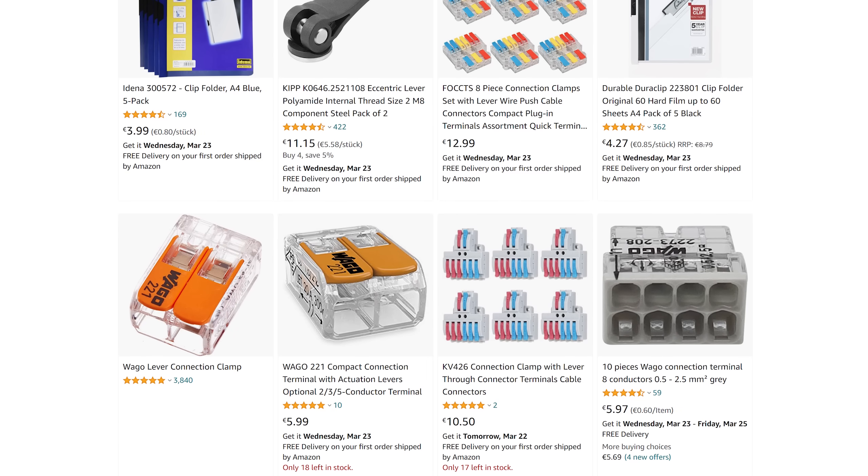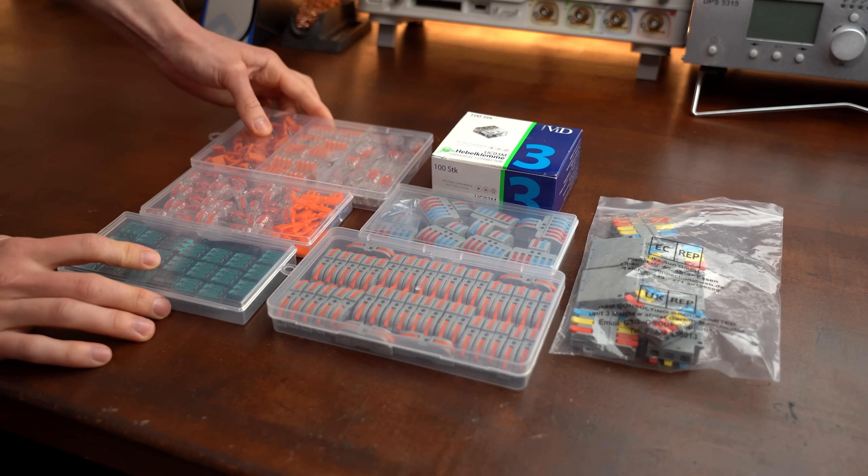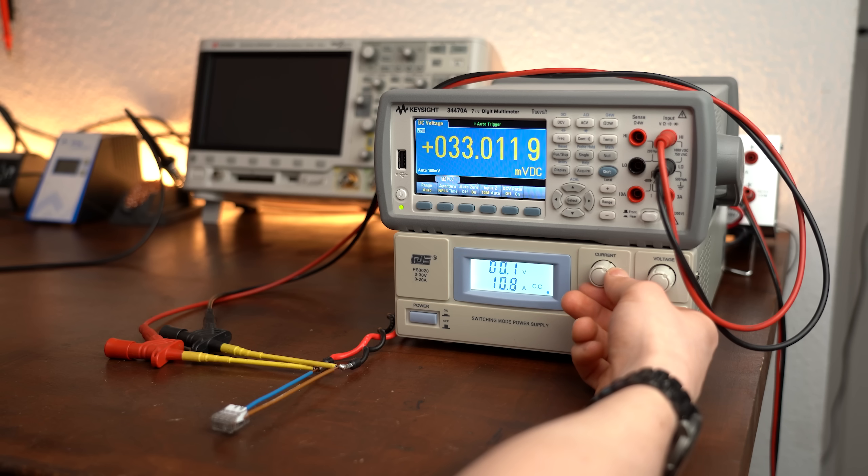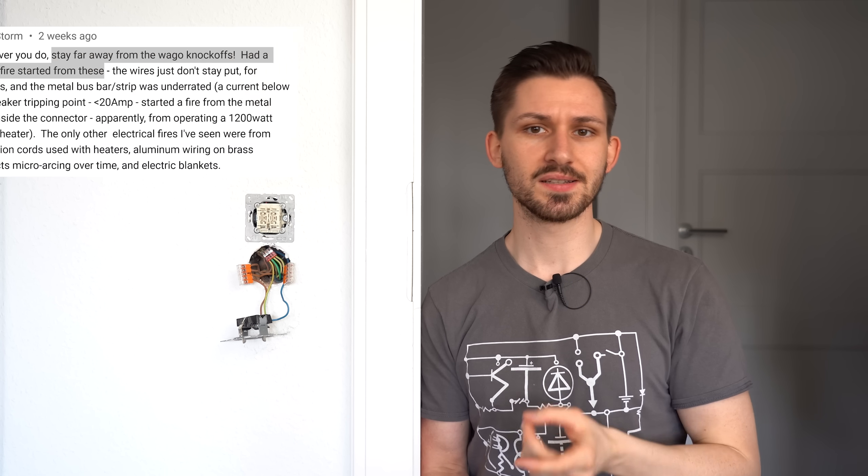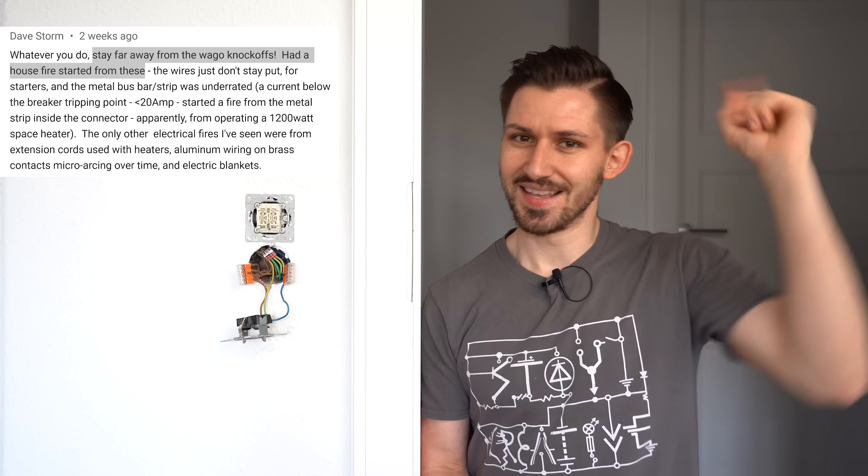You know though, there are temptations out there on Amazon in the form of WAGO knockoffs which at first sight come with a better price point. So what can I say, I got weak and bought myself seven different types of such WAGO knockoffs. In this video I will satisfy my curiosity by not only finding out which one of those is the best and can potentially be a WAGO replacement, but also whether there is truth to such a comment saying that WAGO knockoffs can lead to fires. Let's get started!